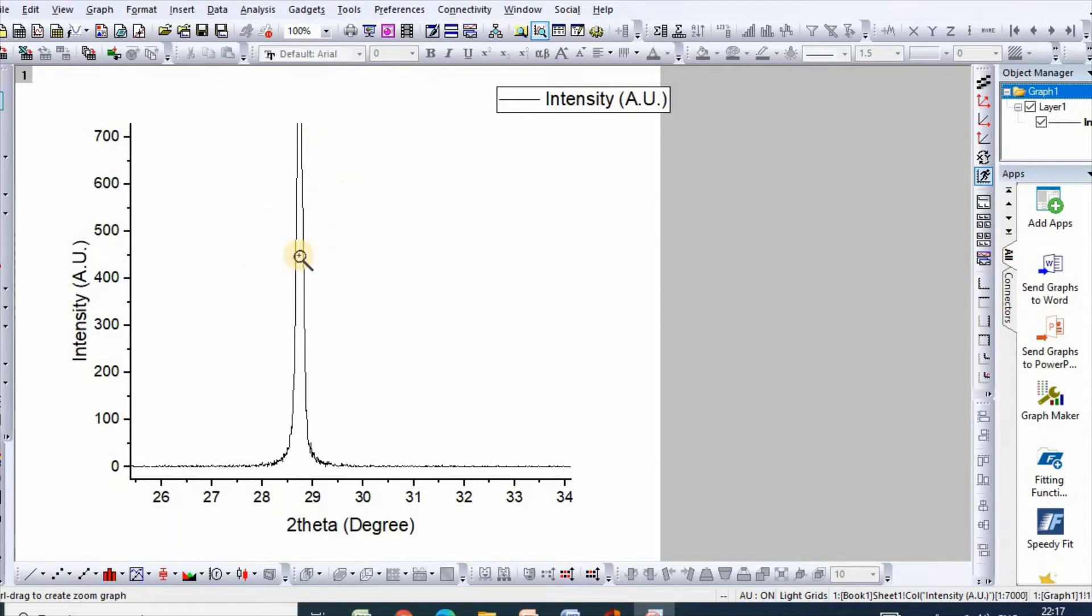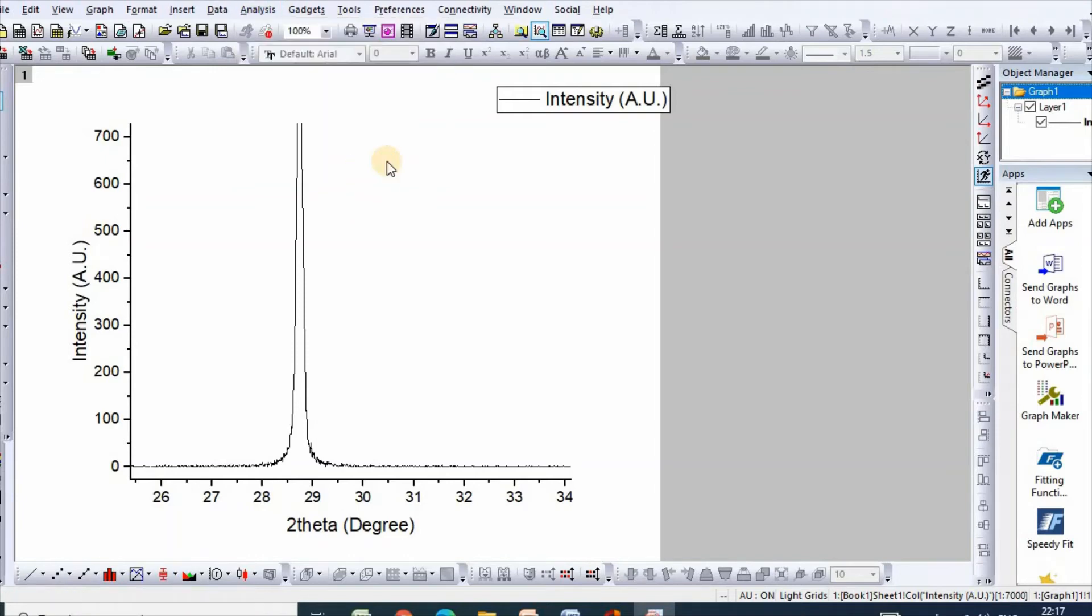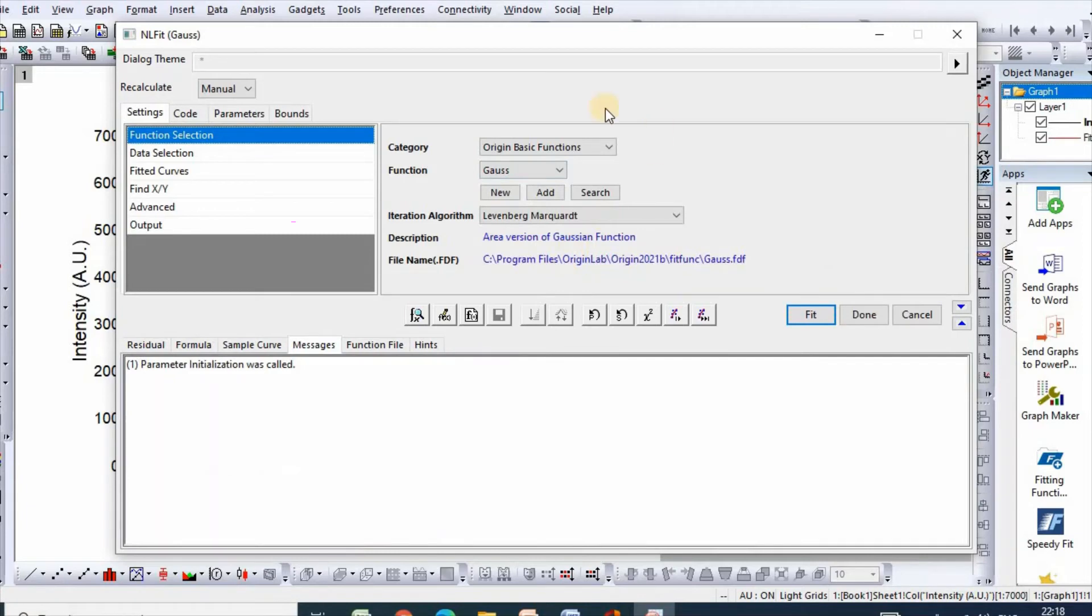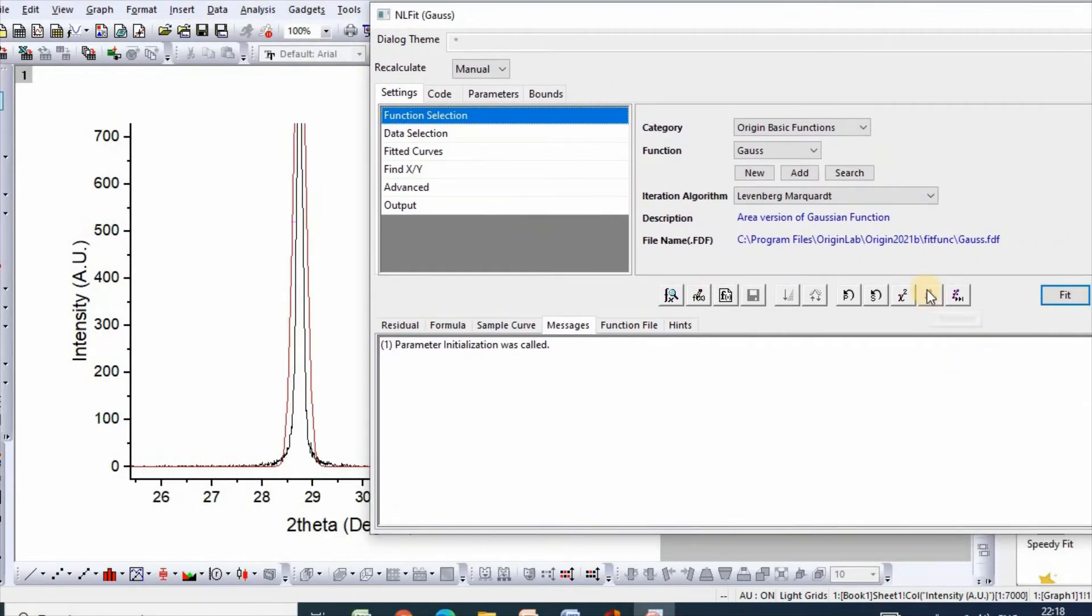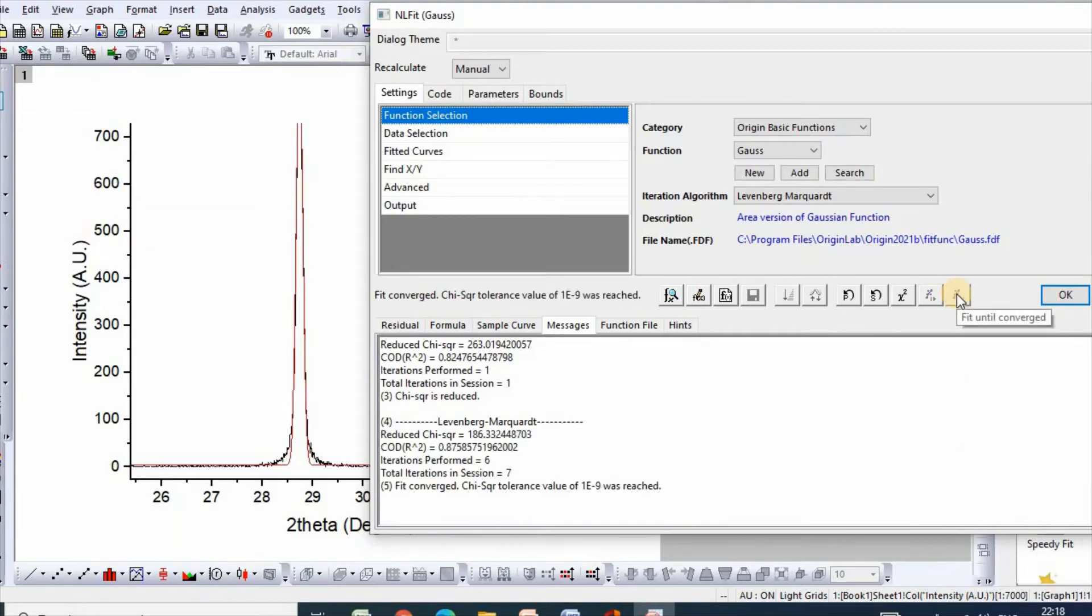Here is my magnified most intense peak. Now let us click Analysis. Then go to non-linear curve fit default. You need to select this Gaussian web function. Then click here and fit until conversed. After this finally click OK.